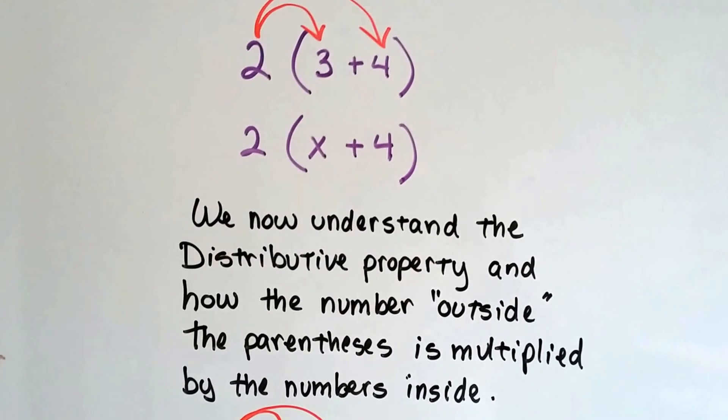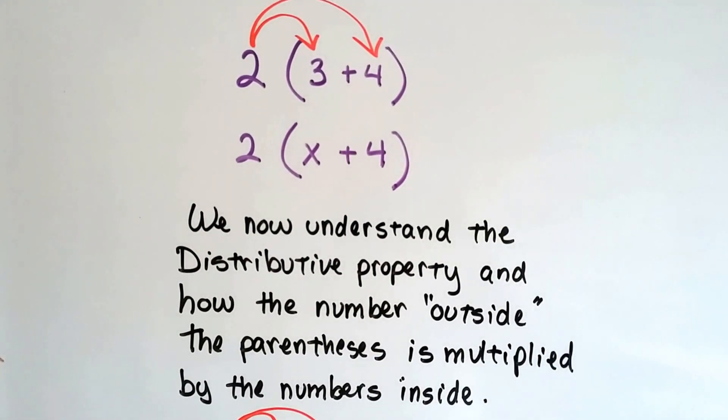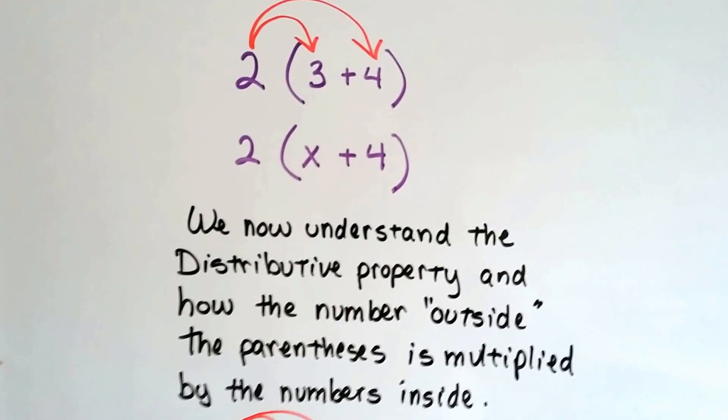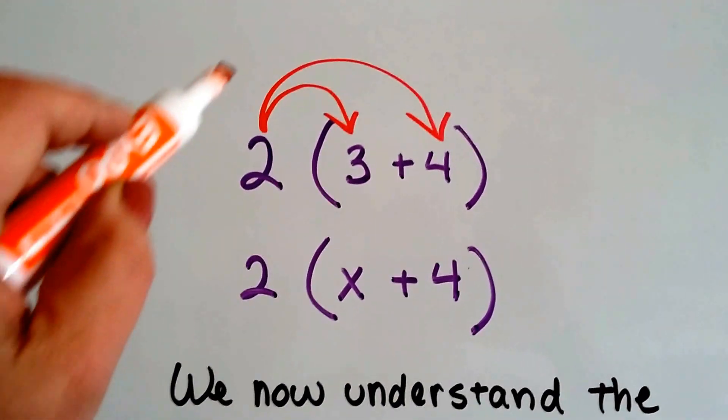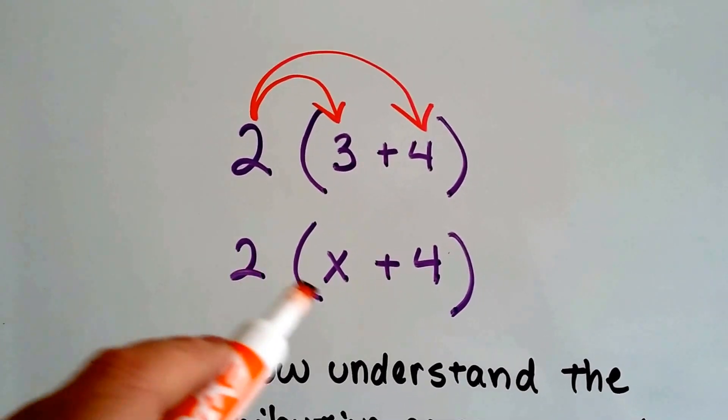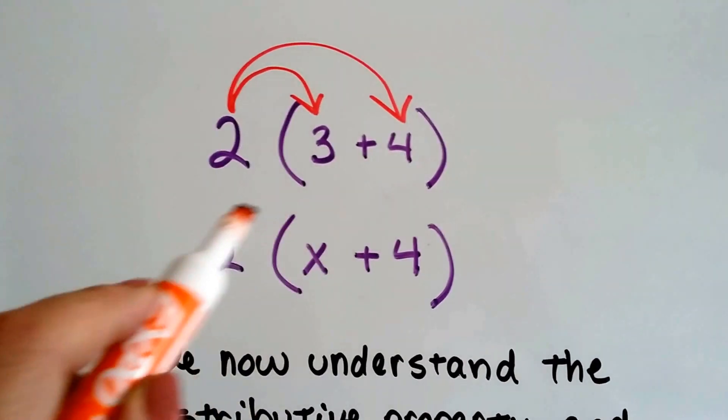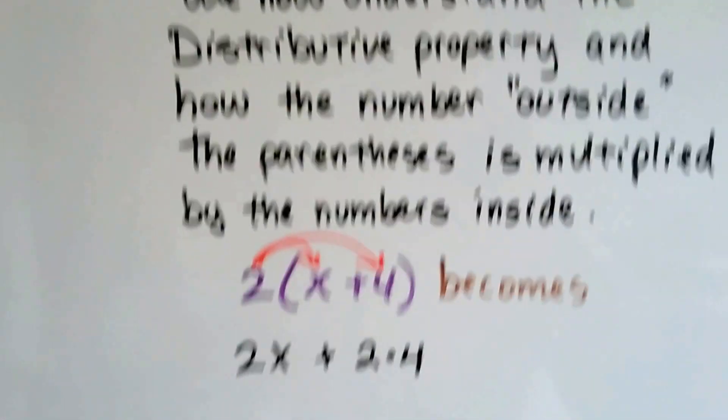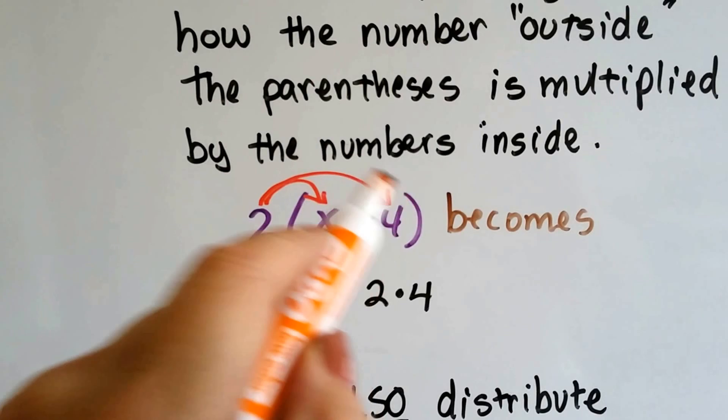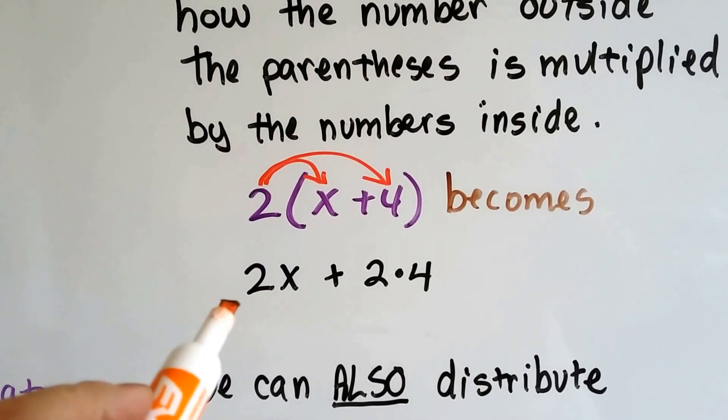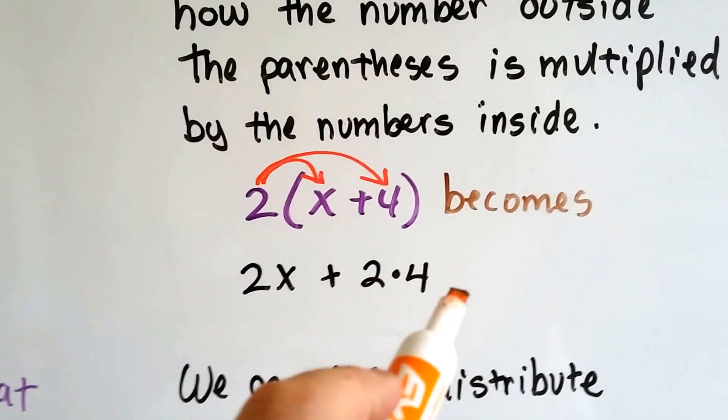We also understand the distributive property and how a number outside the parentheses is multiplied by the numbers inside. When we see this, we know it means 2 times 3 plus 2 times 4. Or if it's a variable, it's 2 times x plus 2 times 4. We multiply each one that's on the inside of the parentheses. It becomes 2 times x plus 2 times 4.